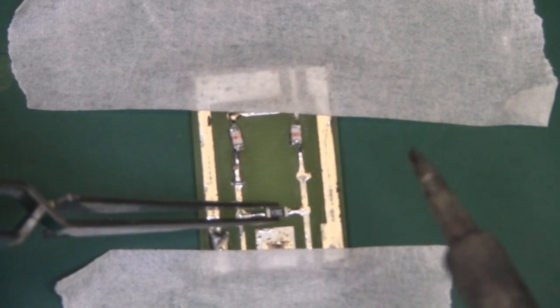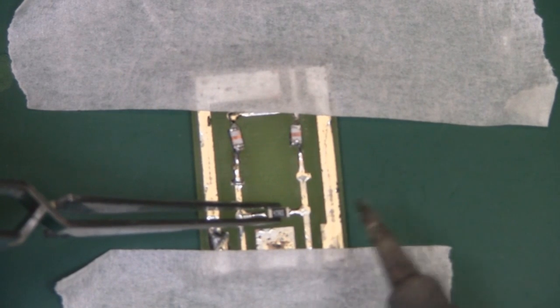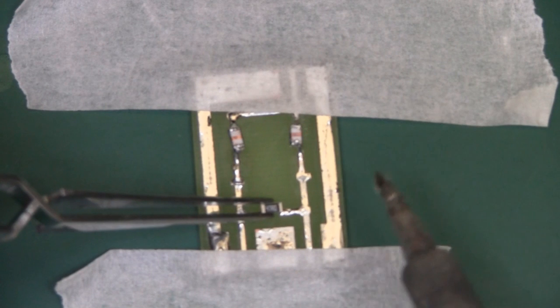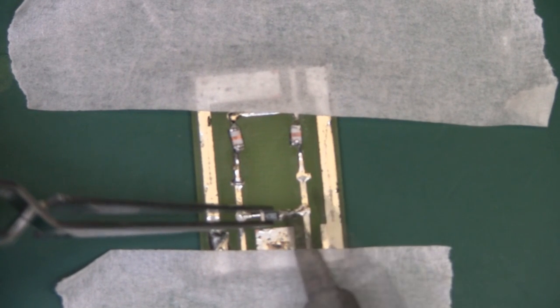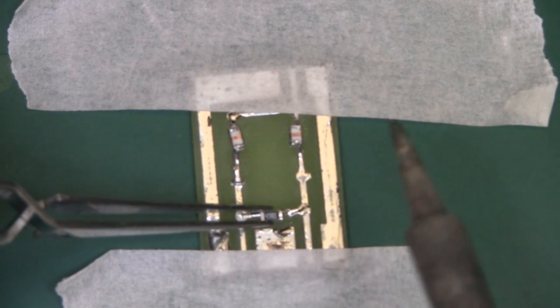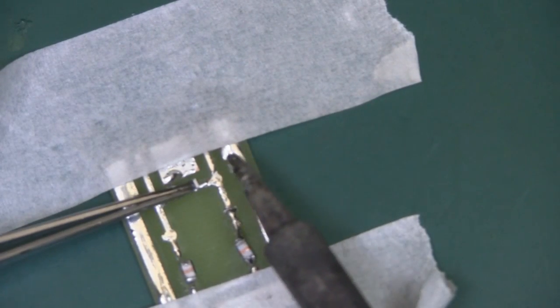Now it's time for the resistor and the same method. Just drag your solder up against the side wall of the resistor and then do exactly the same on the opposite side.